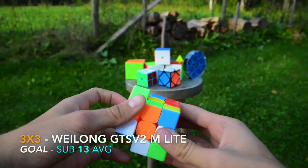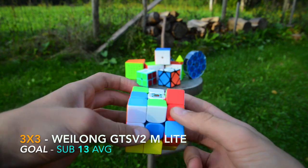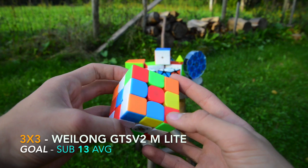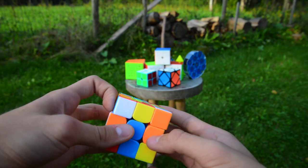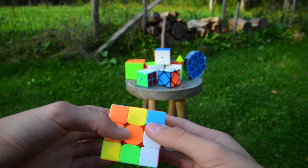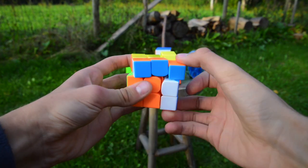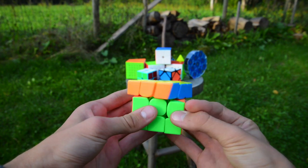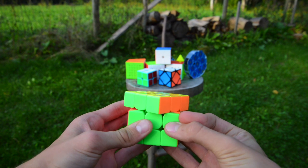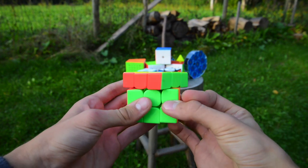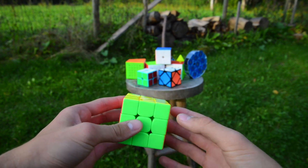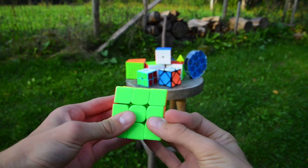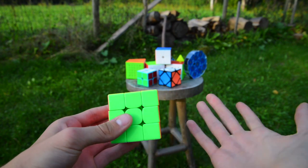For 3x3 I'm going to be using my main, the Weilong GTS version 2 M, and my goal is a sub-13 average. If I break my average I'm going to be super happy. Oh yeah, by the way, I haven't lubed this cube at all and it's really freaking fast. I mean, what? Look at it, and that is a problem. I'll have to try to find my best lube combination. I mean, look at that. And that's alright.